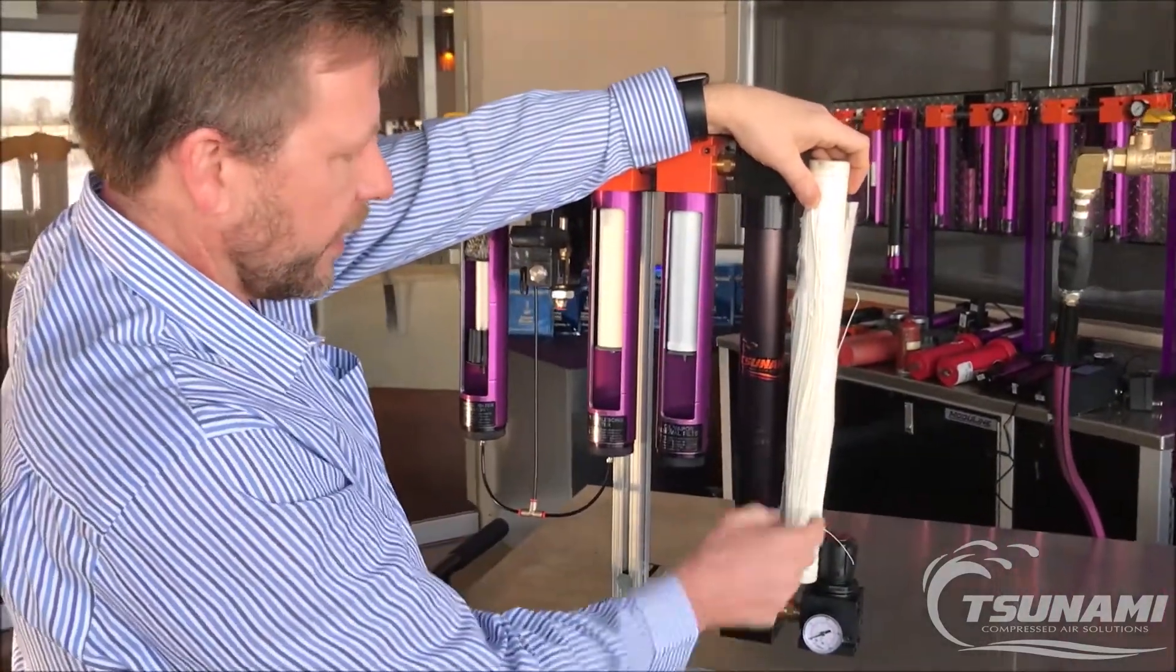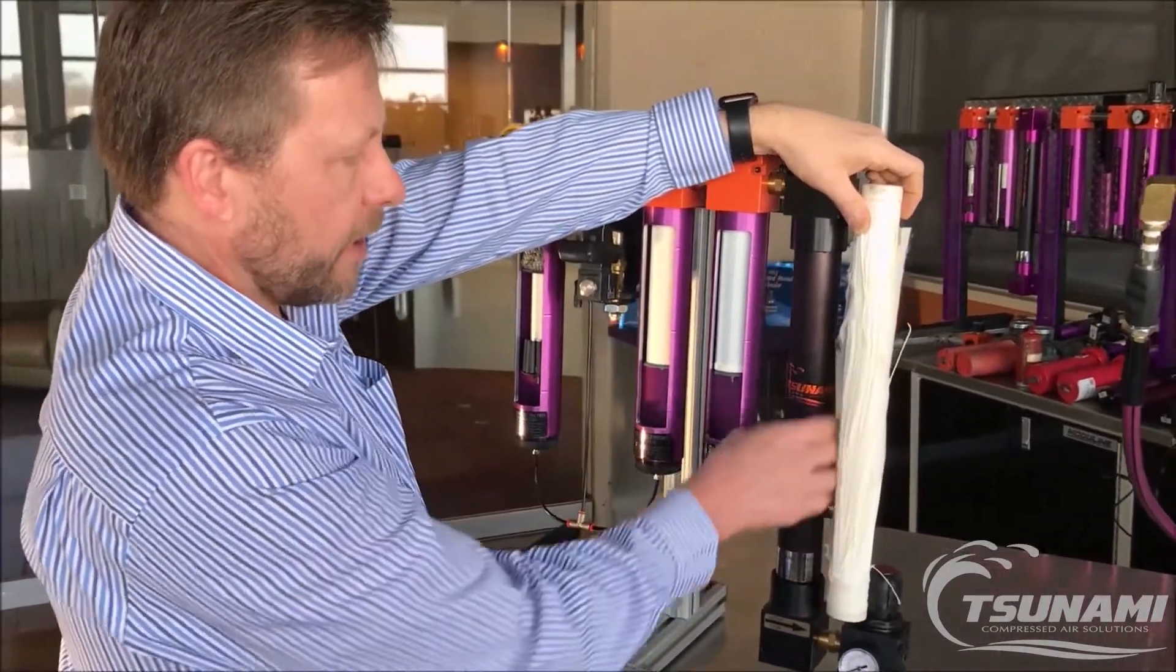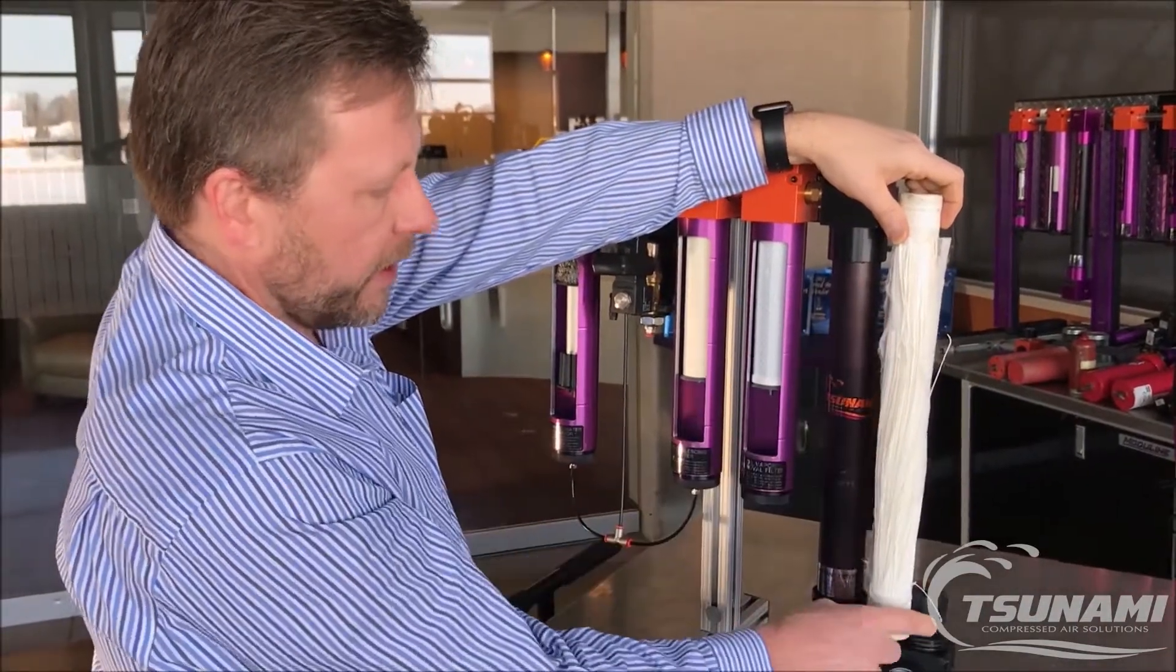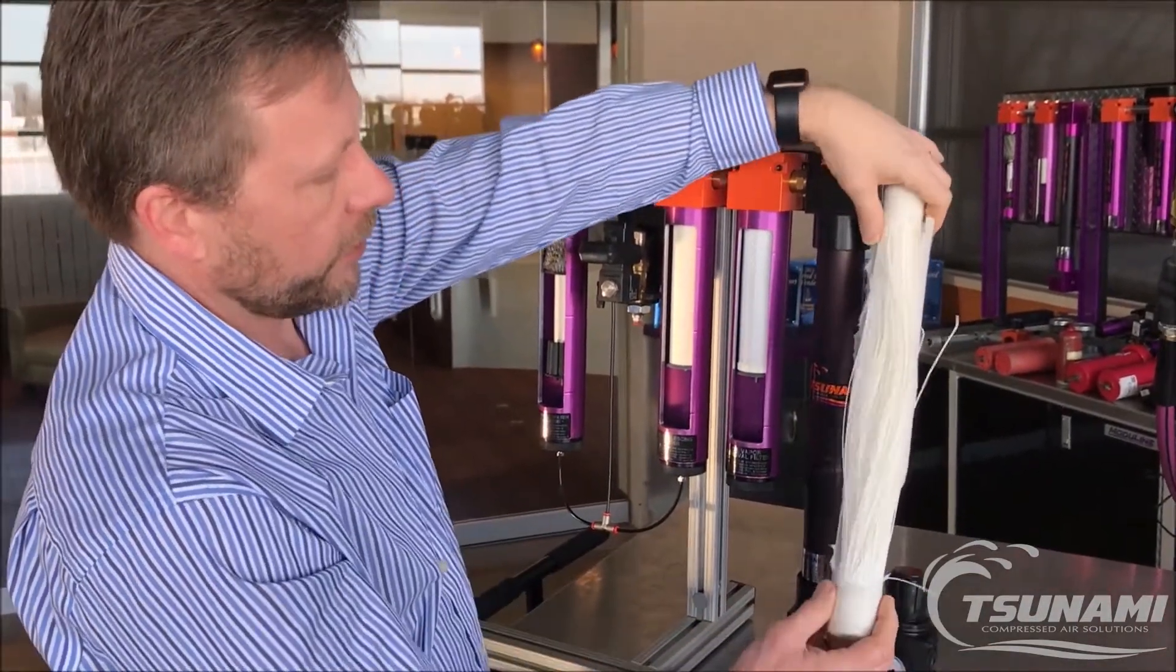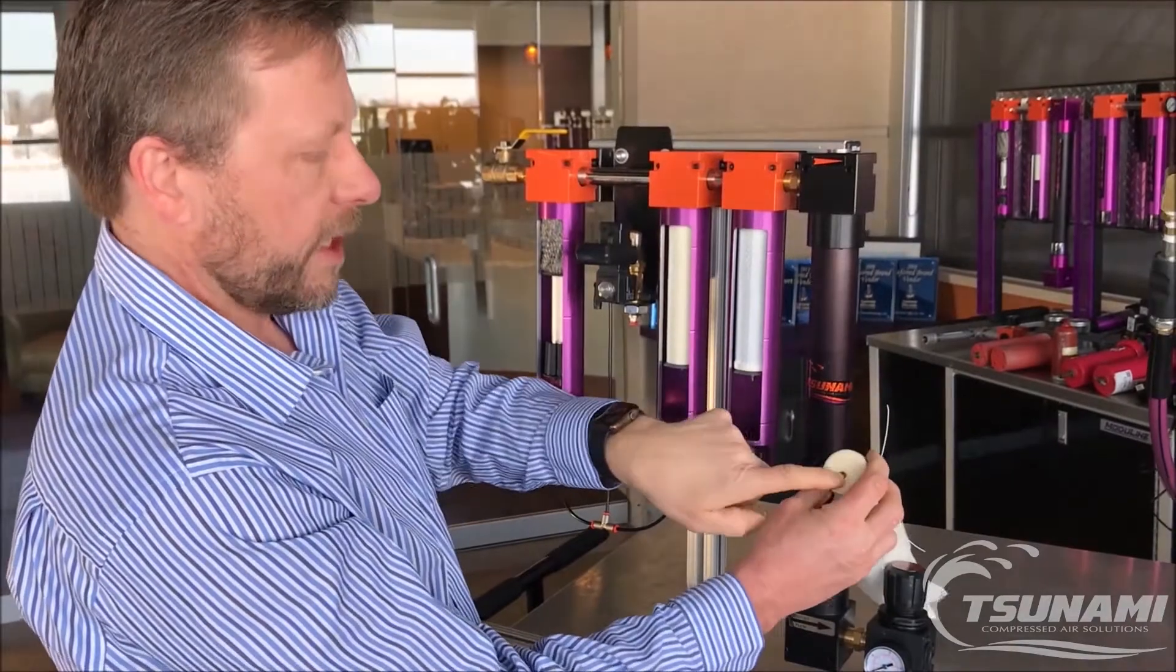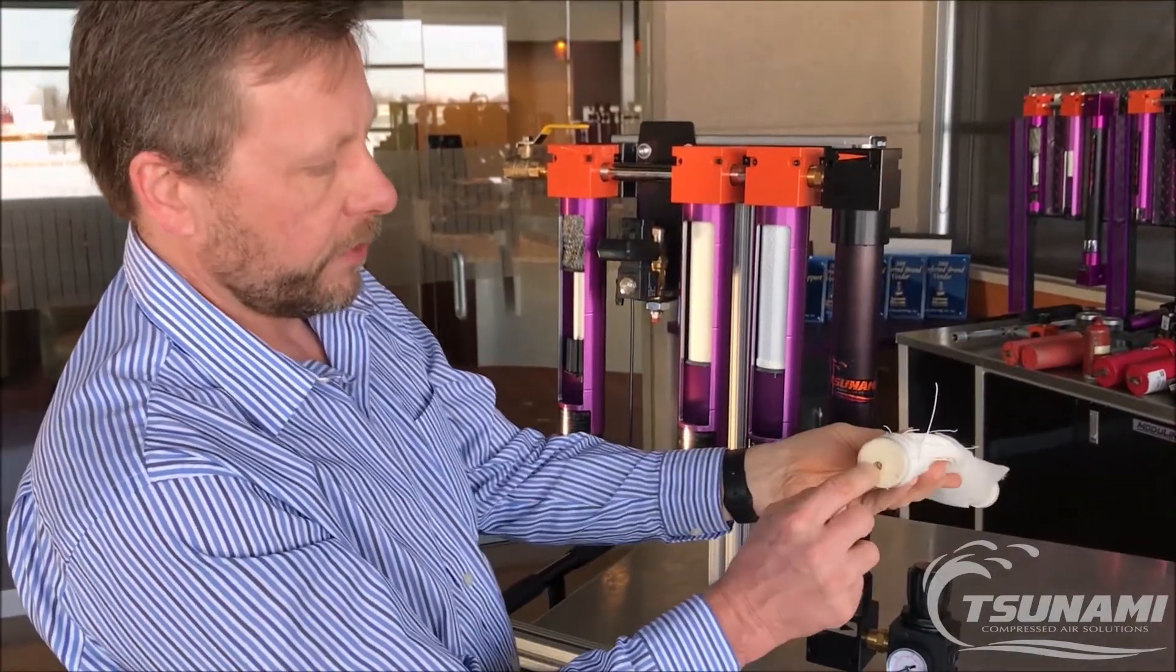So as compressed air is going down, water vapor is escaping and being held in the center of the tube. As dry air is going downstream, we take a small portion of that and drive it through an orifice at the bottom.